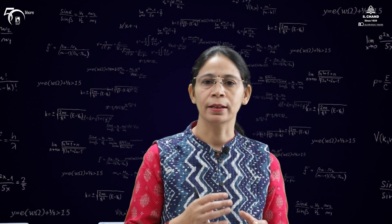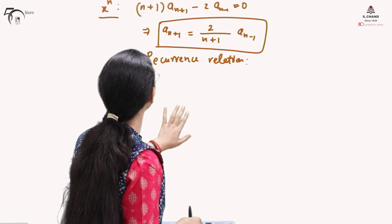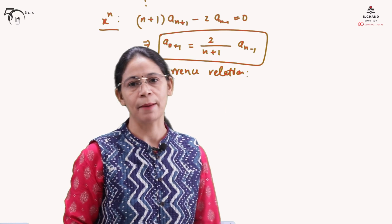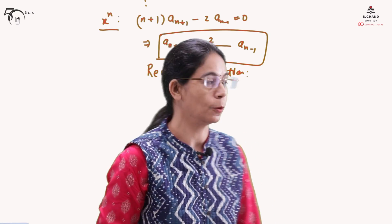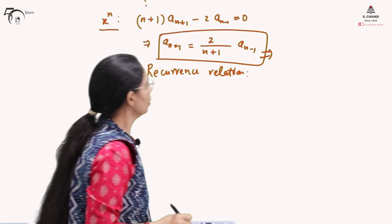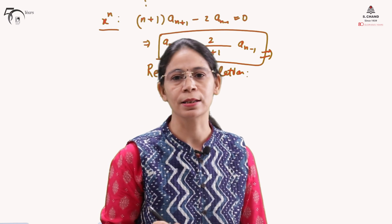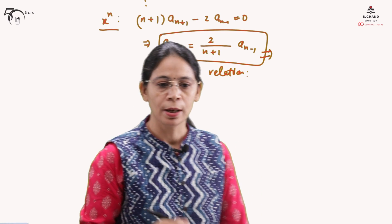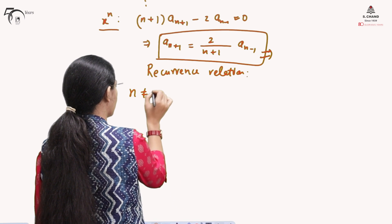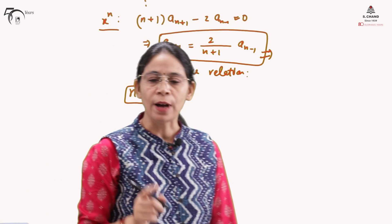We have already established the recurrence relation in the last part of the video. Going back to that, this was the recurrence relation established in the previous part. We noted that it is not valid for n equals 0 or negative values, so n cannot take the value 0.